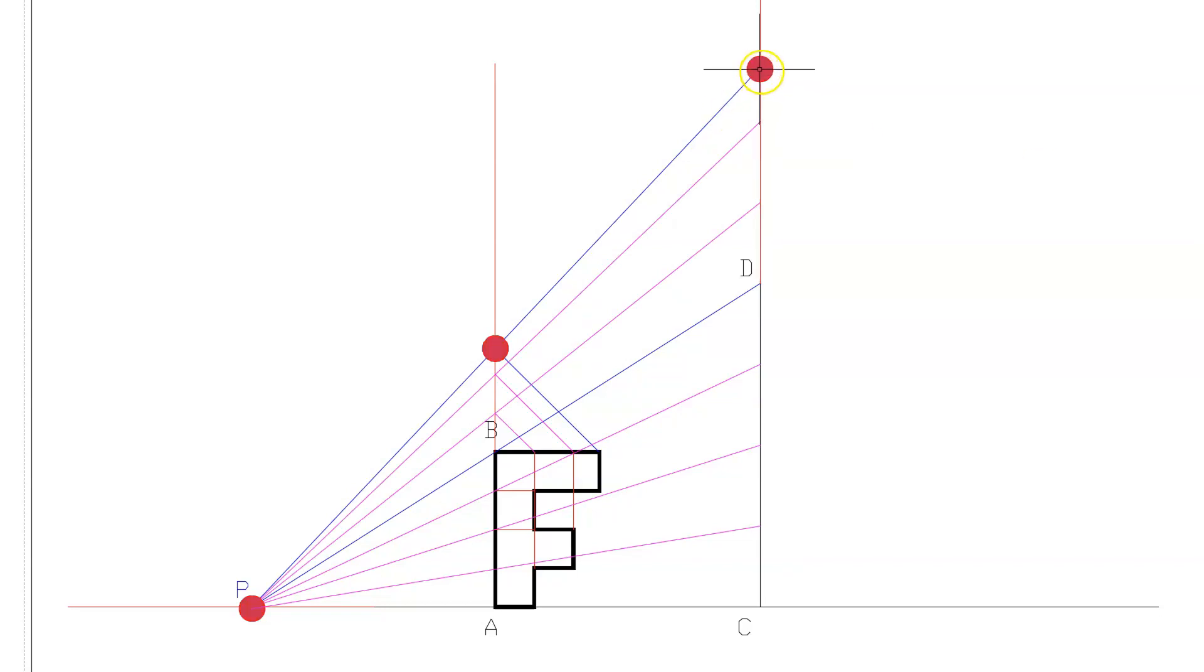And then to get this horizontal dimension, what we've done is we've taken this length, this horizontal length, across here. We've brought it up at 45 degrees, where it's hit this vertical, we've projected the line through P, up onto this vertical, and now we're going to bring a line down at 45 degrees. And that's going to give us the length of the top of our F. Okay, so that's the length of the top of our F.